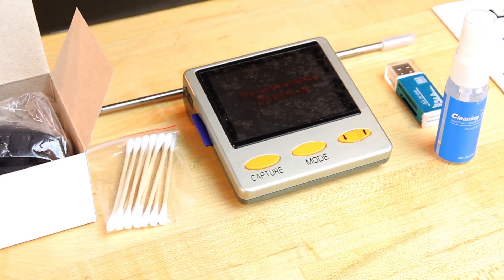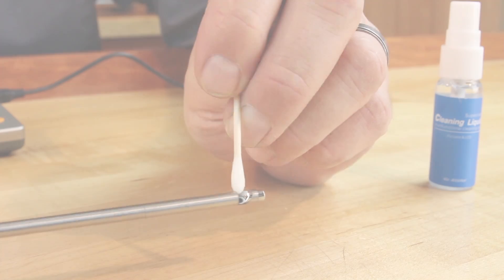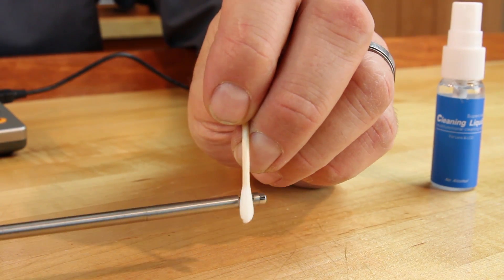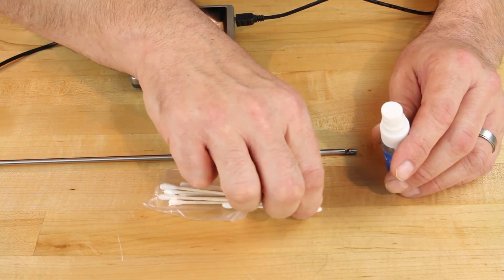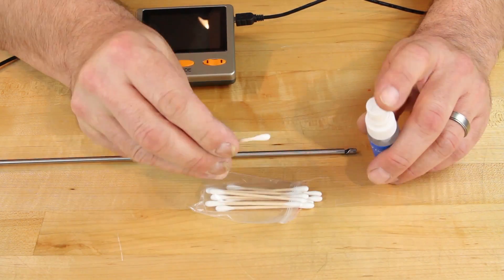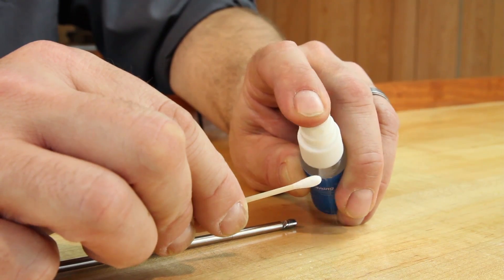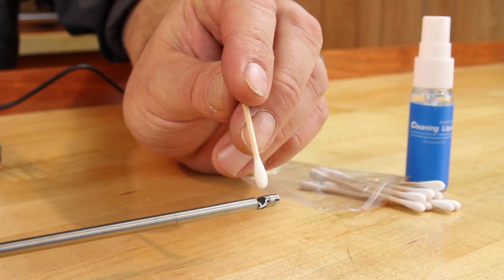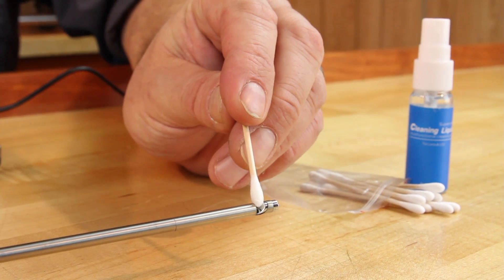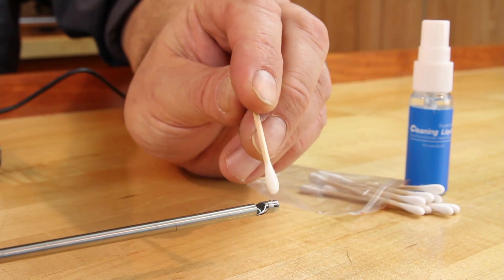A bottle of lens cleaner and cotton swabs are provided. These can be used to clean the mirror at the end of the wand. Dampen a cotton swab with the supplied lens cleaner and clean the mirror at the end of the wand. Clean any dirt, lint, etc. off the lens that can be seen on the displayed image.